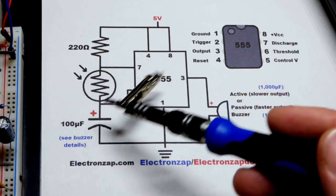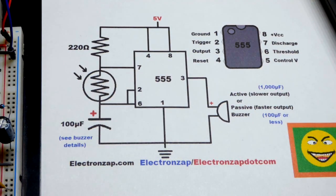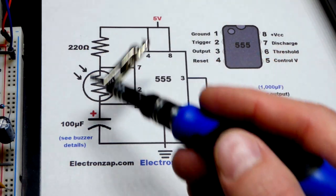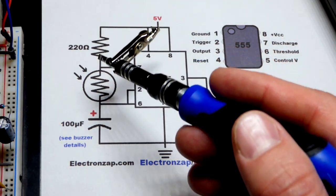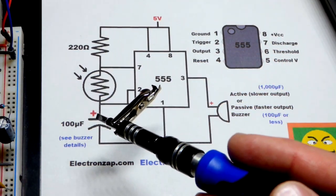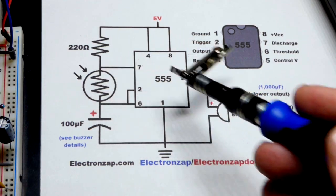We have a light-dependent resistor right there. Its resistance changes based on how much light is falling on it. So brighter light, the capacitor will charge and discharge faster, and then lower light, the capacitor will take longer to charge and longer to discharge.